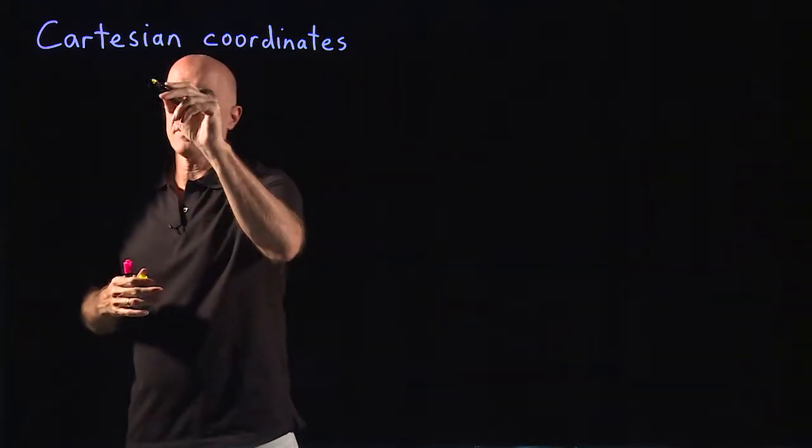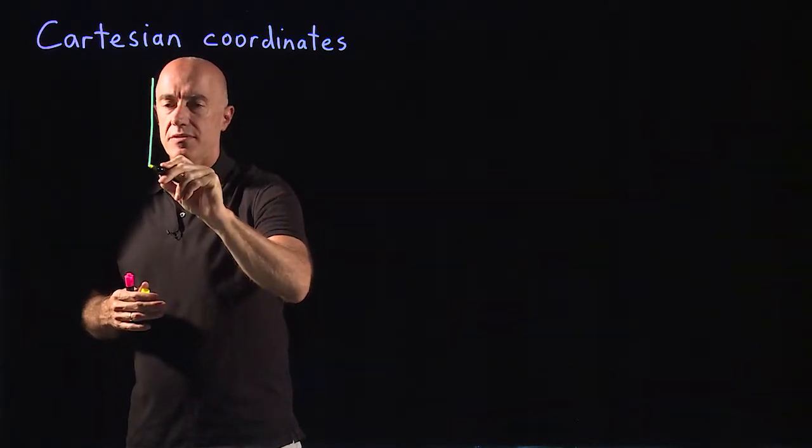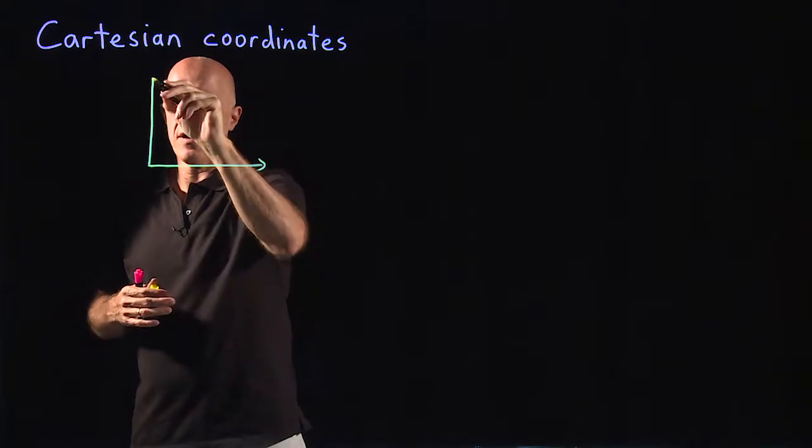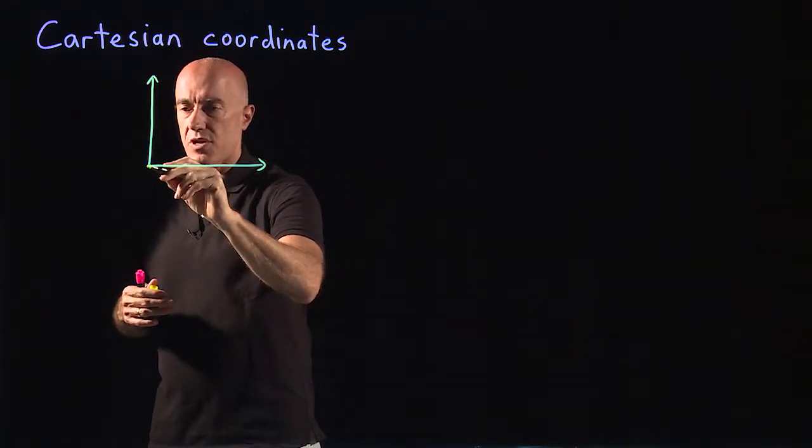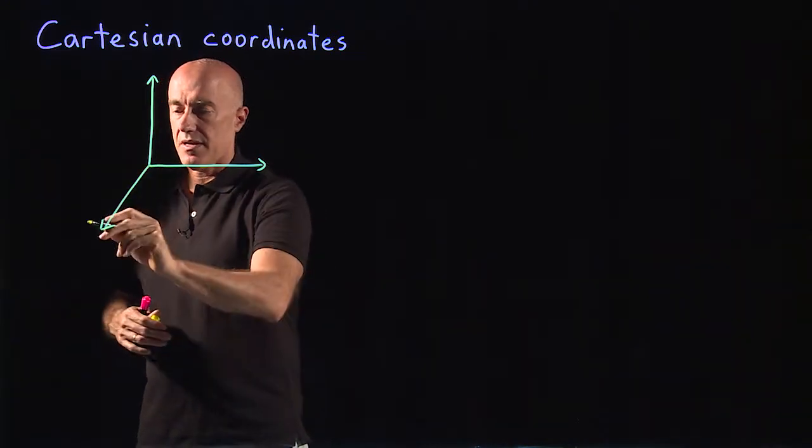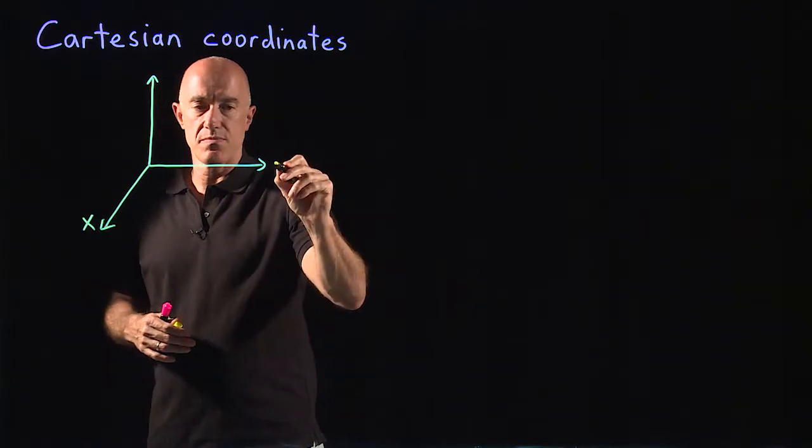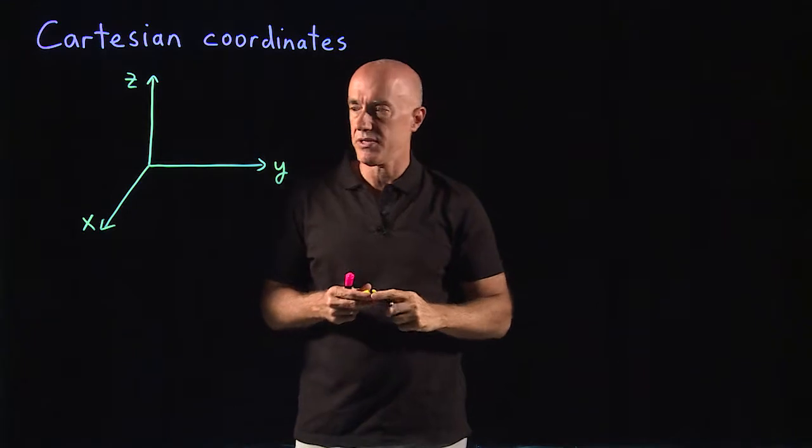In that coordinate system, in three dimensions, you have axes that are mutually perpendicular. So on a two-dimensional board, you can draw it like this. This will be the x direction, this will be the y direction, and this will be the z direction.